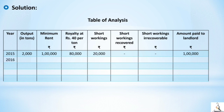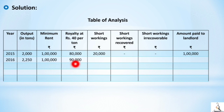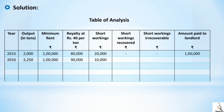In 2016, the output is 2250 units, minimum rent is 1 lakh, and royalty is 2250 × 40 = 90,000 rupees. Royalty is less than minimum rent, so short working is 10,000. Short working recovered and irrecoverable are nil. Amount paid to landlord is 1 lakh, as minimum rent becomes payable.